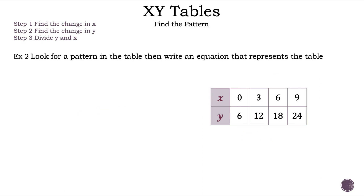Let's move on to example 2. Now, let's read the question. Look for a pattern in a table where we have 0, 3, 6, and 9 for X, and 6, 12, 18, and 24 for Y. Then write an equation that represents the table.